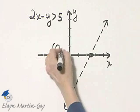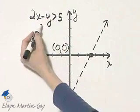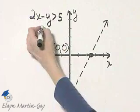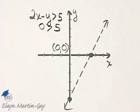I'm going to check the point with coordinates 0, 0. So I'll let x be 0 and y be 0. If x is 0 and y is 0, I have this inequality, which is either true or false.